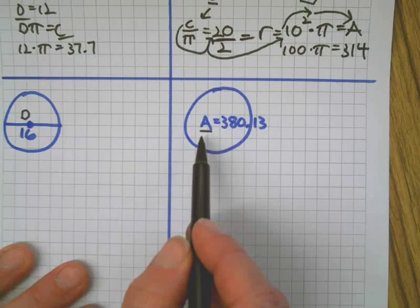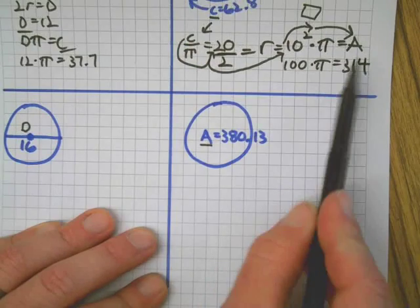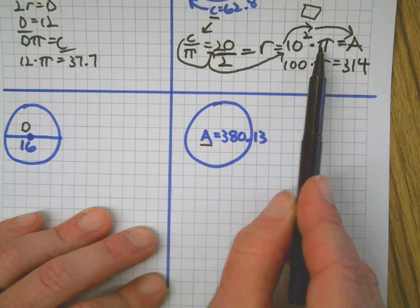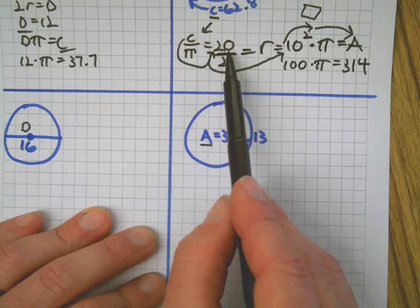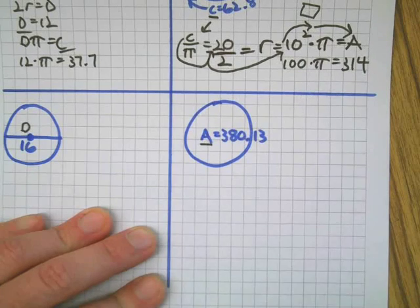Since we just did that, let's skip down to this one. We're going to do the opposite thing. We're going to start with the area, we're going to divide it by pi, take the square root to find the radius, we're going to times 2 to get the diameter, and times pi to get the circumference. They all go in order. Area divided by pi equals the radius squared.